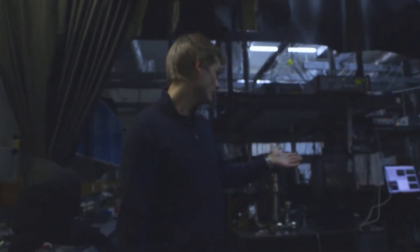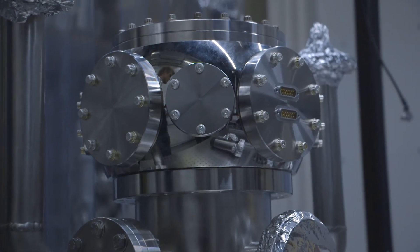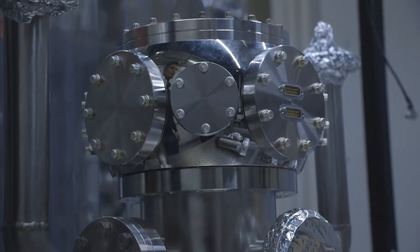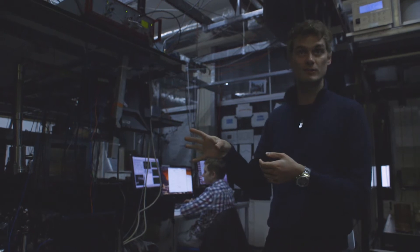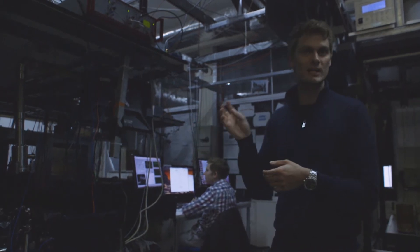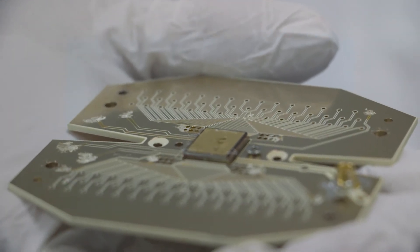So this is what a typical quantum computing lab looks like. You see large vacuum systems for example where we suck out all of the air until you really have a better vacuum than in outer space inside these systems. Inside these systems is actually where we trap these individual ions and then encode information in them to process information.